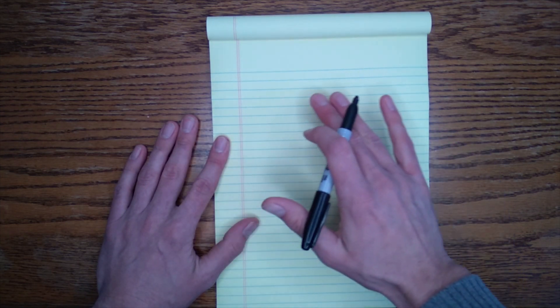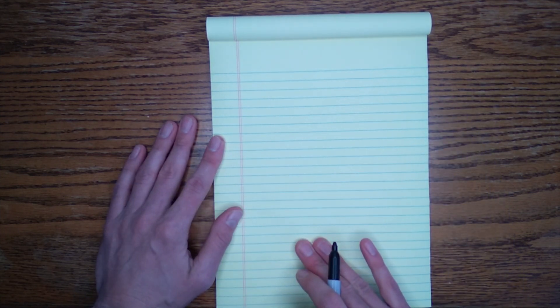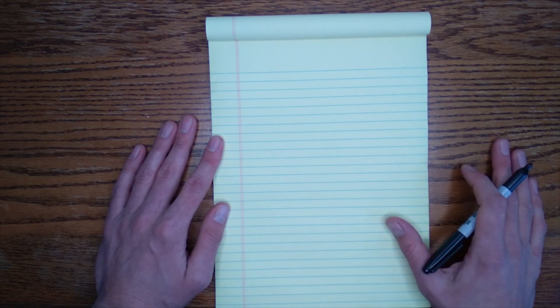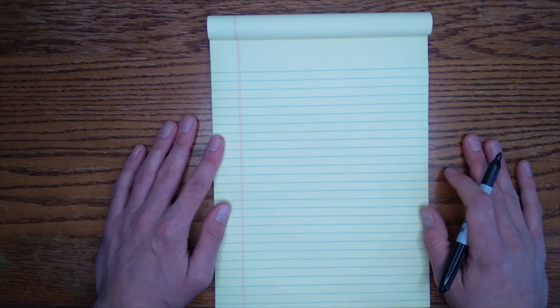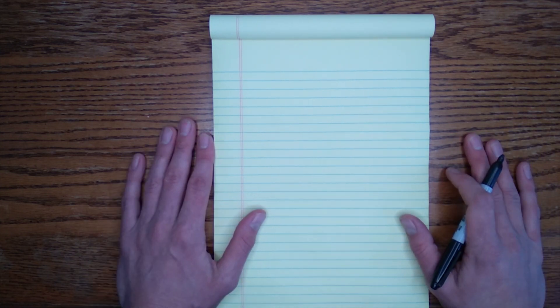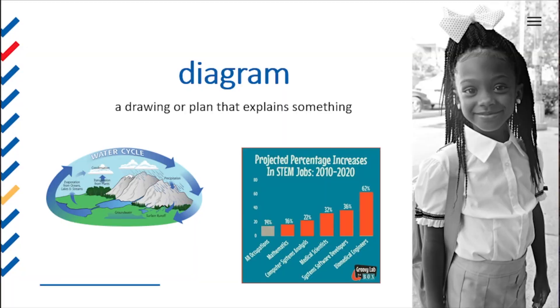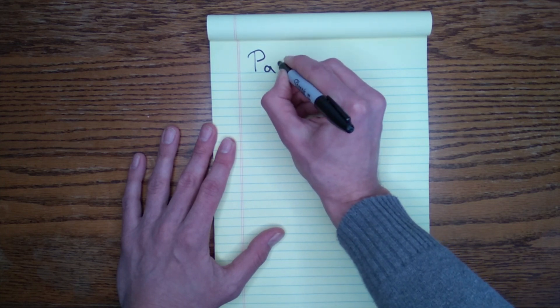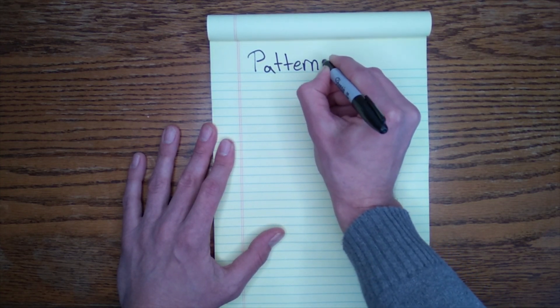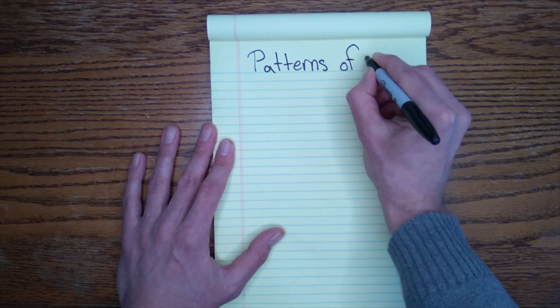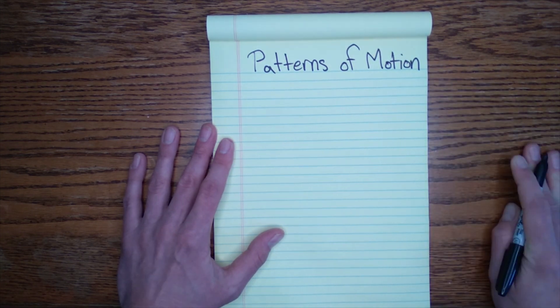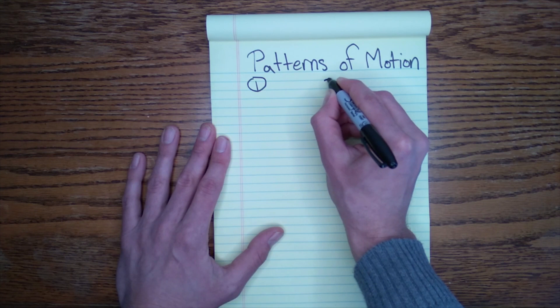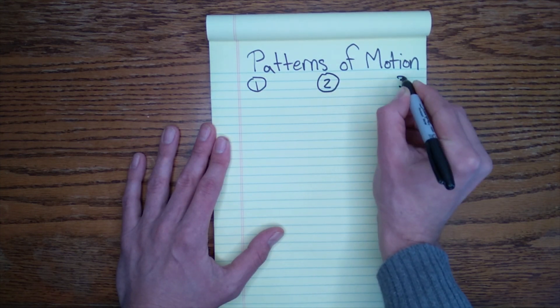Next, we're going to map out our patterns of motion that we discussed. Then you will find a final pattern of motion on your own to complete this diagram. Remember that a diagram is a drawing or plan that describes something. The first thing we're going to do for our diagram, just like the previous diagram we've made in our class together, we're going to give it a title. Patterns of motion.